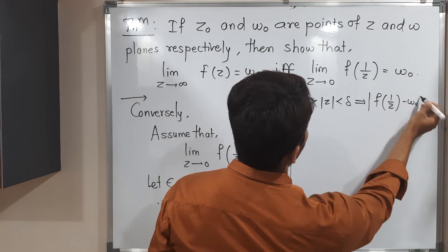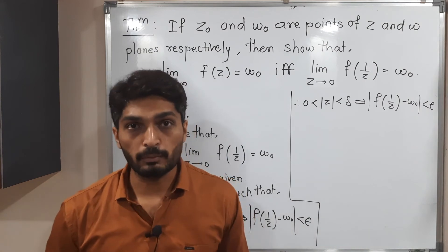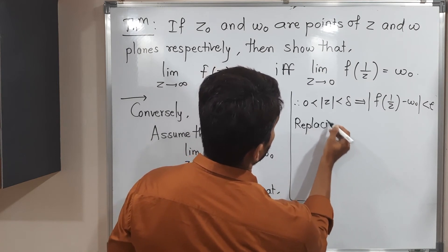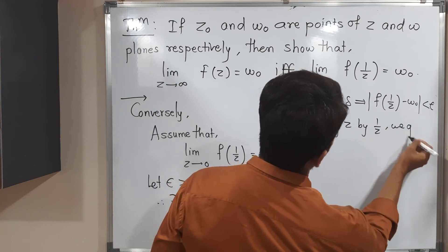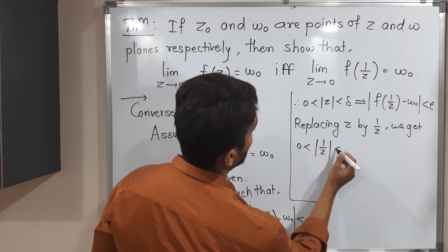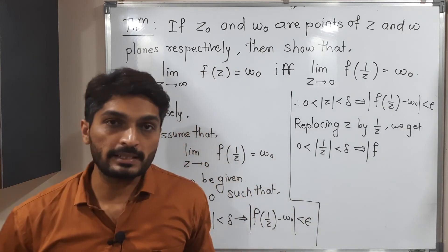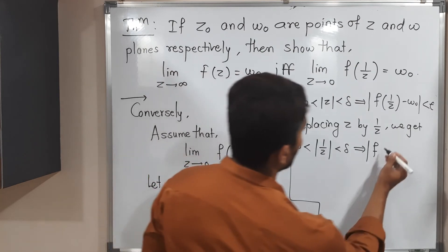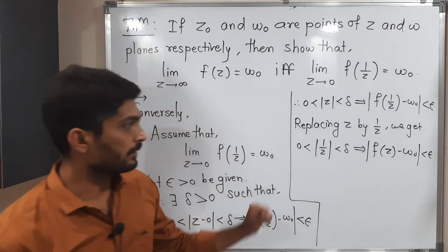Now I am going to use the same technique — replacing z by 1/z. After replacing z by 1/z, we get: 0 less than mod(1/z) less than delta implies mod f(z) minus w₀ less than epsilon, because 1/(1/z) = z shifts back to the numerator.